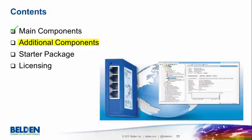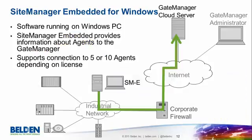Earlier in the presentation I showed you the site manager running inside the Hirschmann Gecko switch, but there is an alternative. The software can also run on a Windows PC with the same functionality — providing information about connected devices to the gate manager, supporting five or ten agents. In this case, the software is running on a PC which may already be running somewhere on the network, for example a panel PC, meaning the Gecko is not required to act as a site manager.